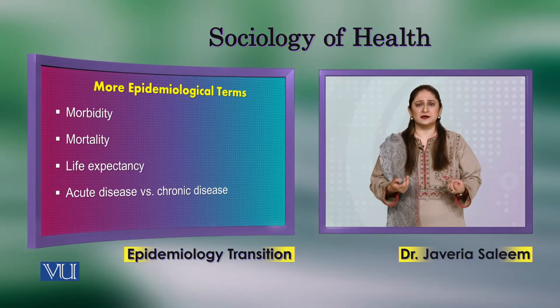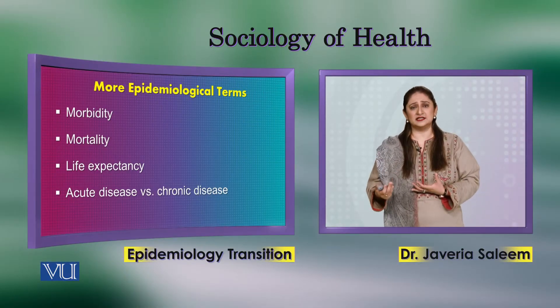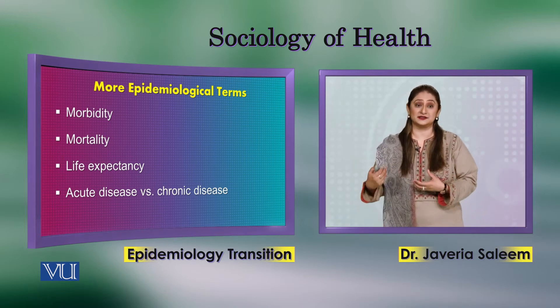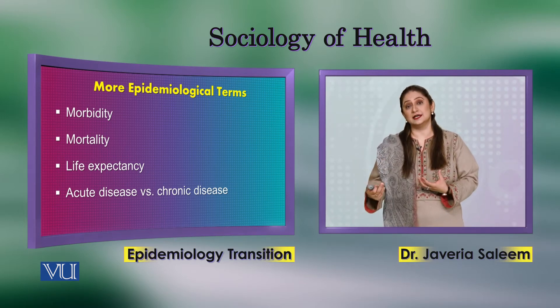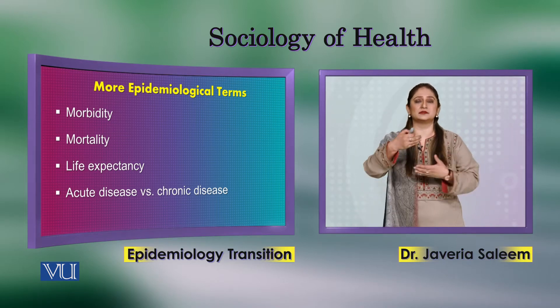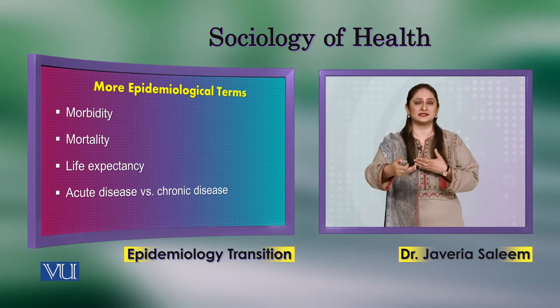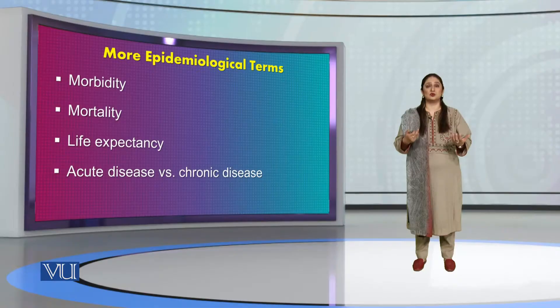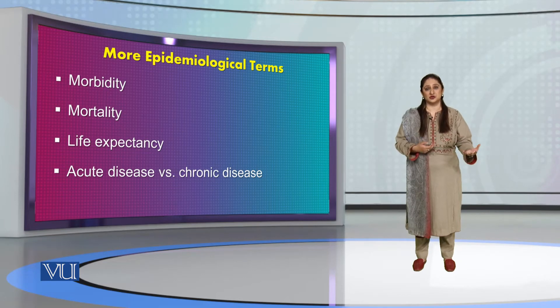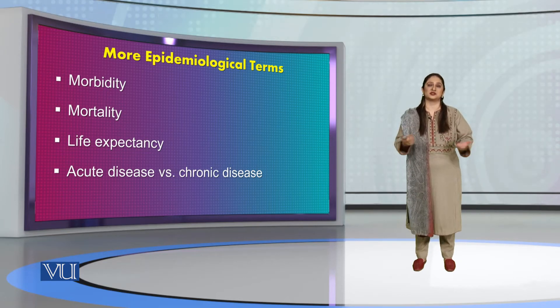There are also other important terms: morbidity, which refers to the disease pattern; mortality, which refers to the death pattern; and life expectancy. Additionally, we have the concept of acute versus chronic disease. Acute disease is of short duration, while chronic disease is of long-term duration.